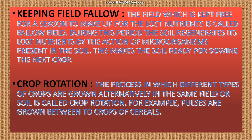Second is crop rotation. The process in which different types of crops are grown alternatively in the same field and soil is called crop rotation. It means in one season we grow one crop, and in the other season we grow another crop. For example, in the first season we grow a crop that needs more nutrition, and in the second season we grow pulses or leguminous plants to increase the fertility of the soil.